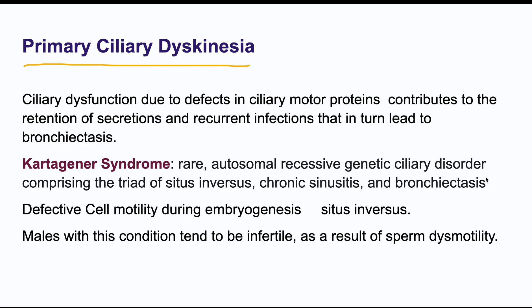In primary ciliary dyskinesia, there is a defect in ciliary motor proteins, causing retention of secretions and recurrent infections. A related ciliary disorder is Kartagener syndrome, an autosomal recessive disorder with a triad of situs inversus, chronic sinusitis, and bronchiectasis. Defective cell motility also occurs during embryogenesis, and males with this condition tend to be infertile due to sperm dysmotility.